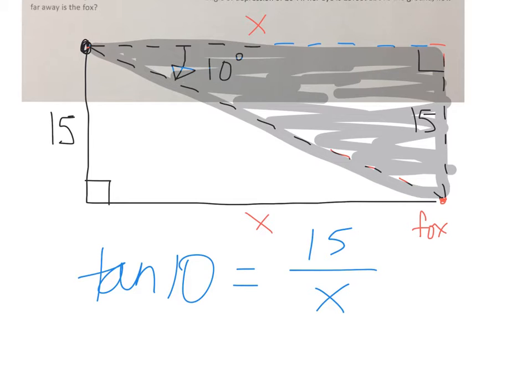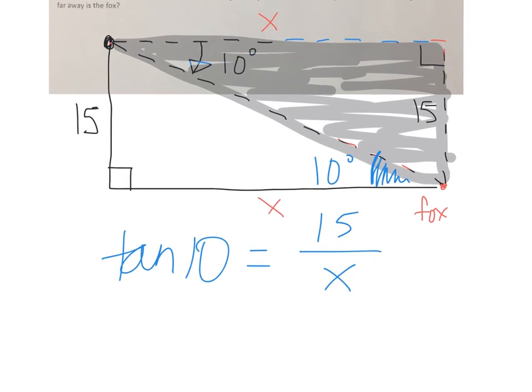Okay, this is also true if you take it from the fox's perspective. If Alex sees a fox at 10 degrees and the fox is looking back at her, then the fox sees Alex at 10 degrees also. Pretty amazing how one person's perspective is depression and the other person's is elevation.